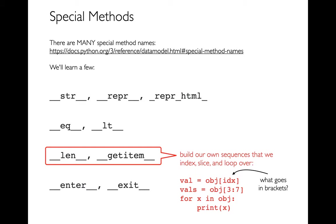Back in CS220, we learned about different sequences — whether a string or a list, I can index, slice, loop over things, and get the length. In this class, we already learned one new sequence: the bytes sequence. And if we implement the special methods __getitem__ and __len__, we can convert our new classes into new types of sequences that have all of these properties.